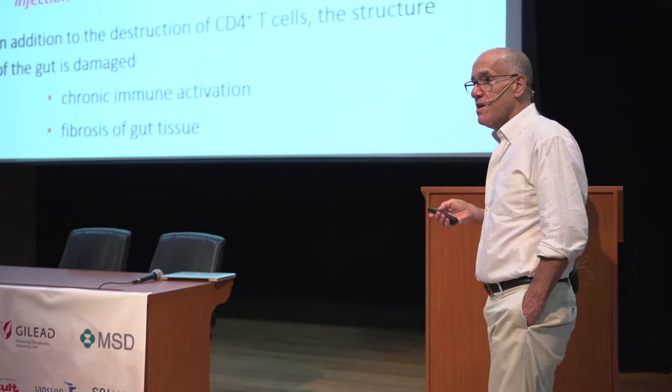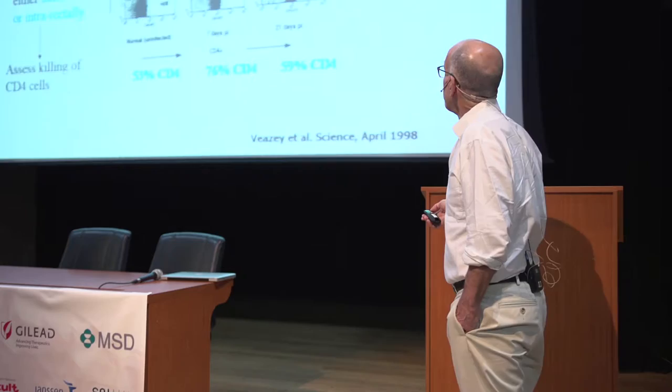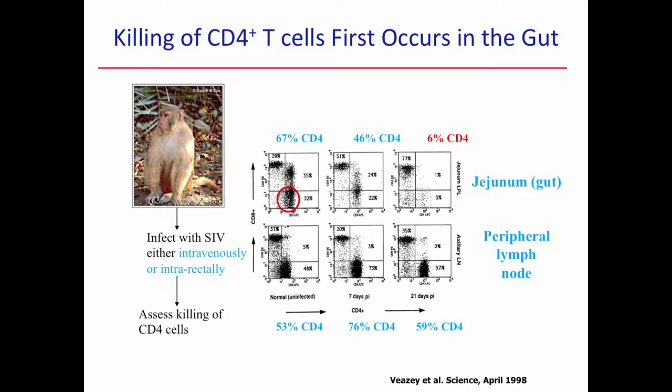I'm going to show you some of the early work just to acknowledge the people who actually did this. This is one of the first studies done by Ron Vesey — there were some other groups that did similar work around the same time. This was done in an SIV macaque model. What I'm showing you here is basically the frequency of CD4-positive T cells in the gut and in a peripheral lymph node, either before infection or in the week or weeks after infection.